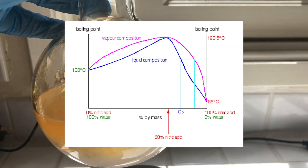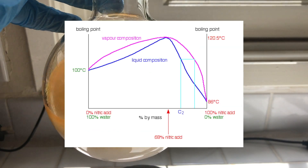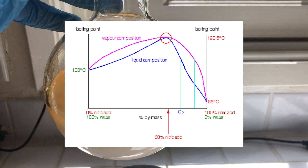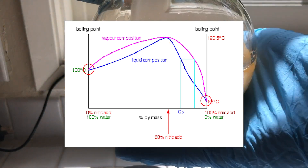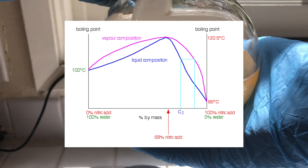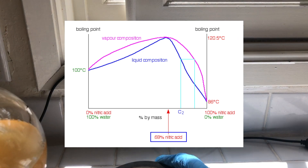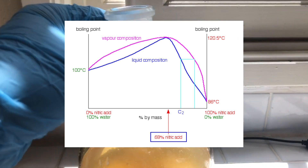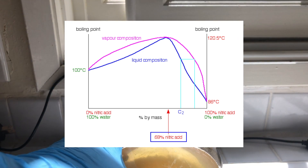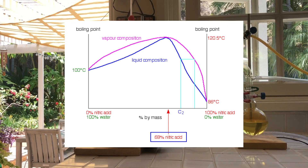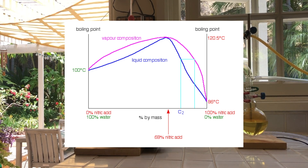An azeotrope happens when a mixture of two liquids boil together at a different temperature than each liquid on its own. In other words, vapor produced from the distillation has the same concentration of the two constituents as the liquid in the boiling flask, so we can't get a higher concentration just by distillation. Nitric acid forms an azeotrope with water at about 68%, and this is the concentration most often found in the lab.